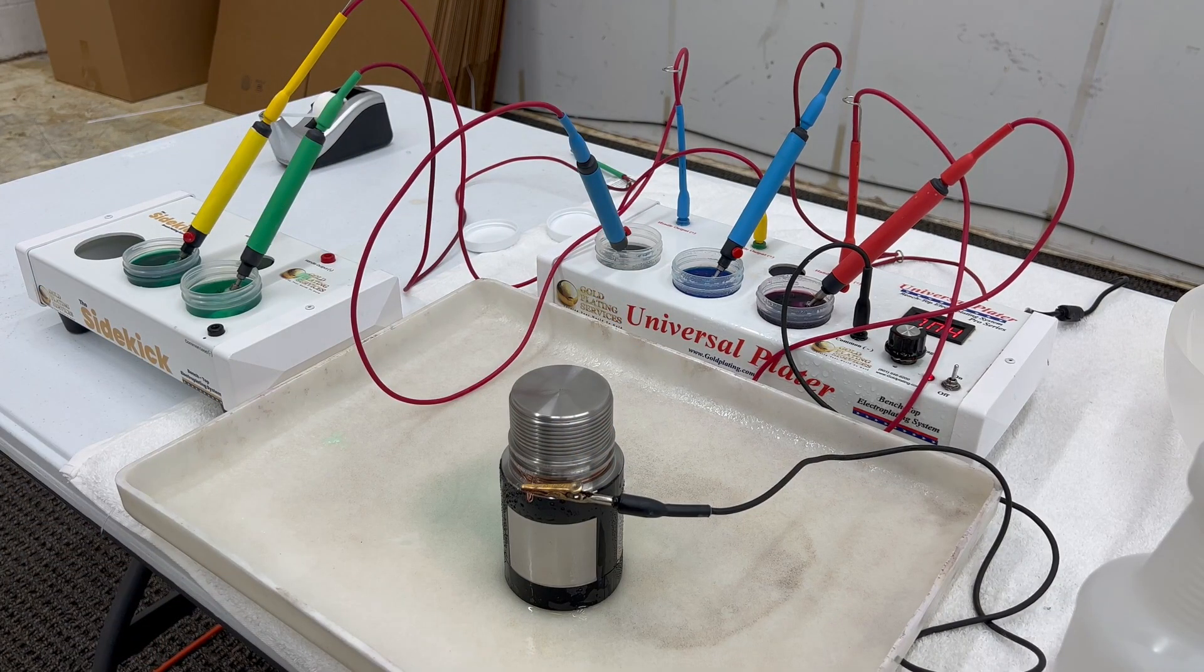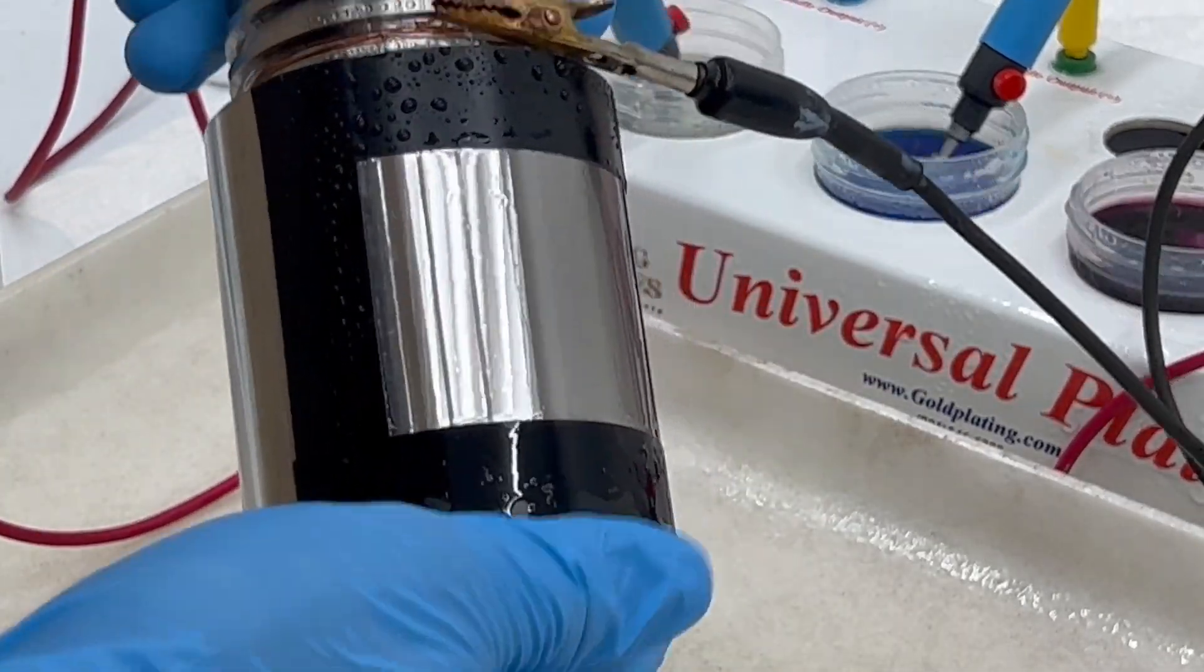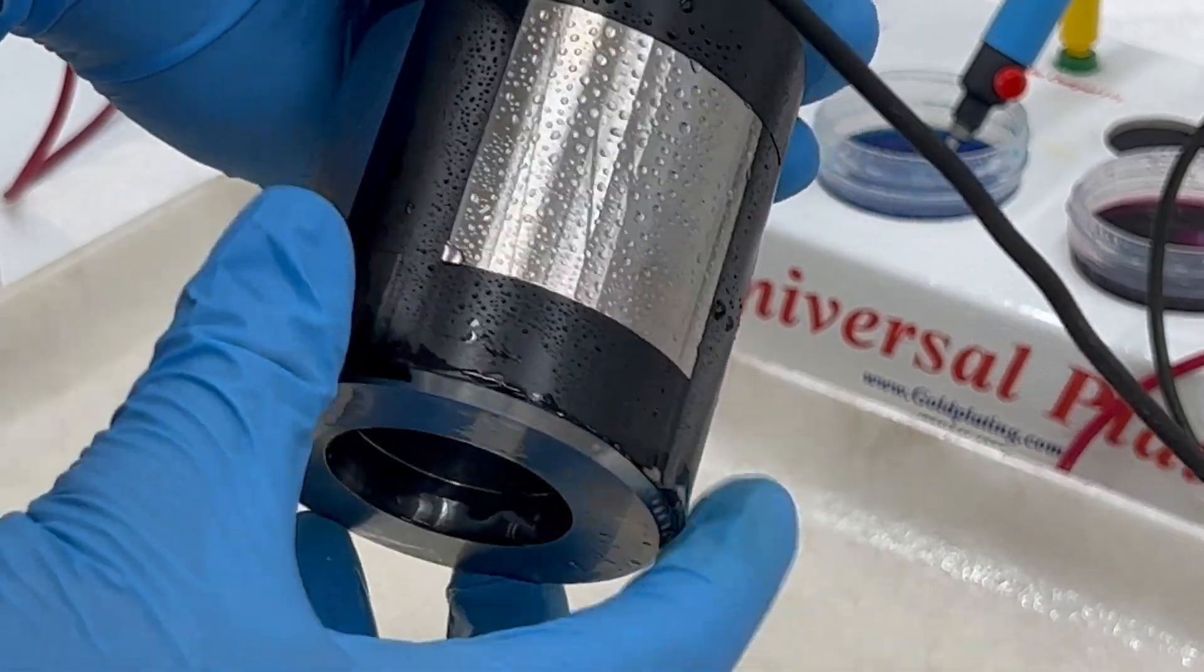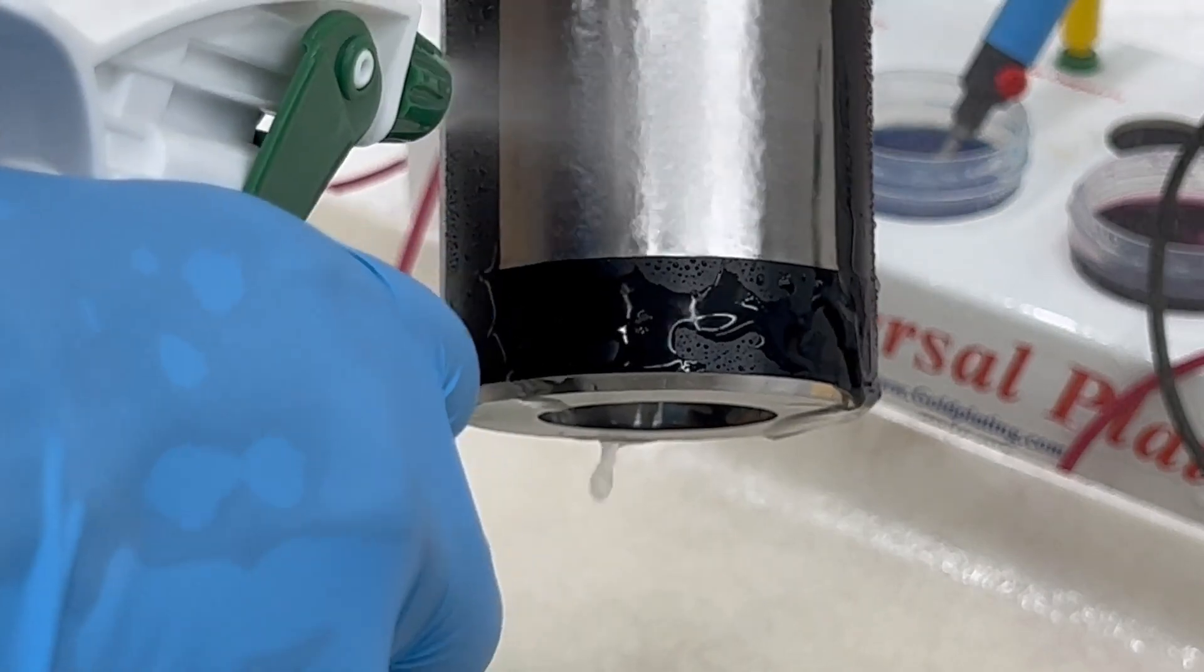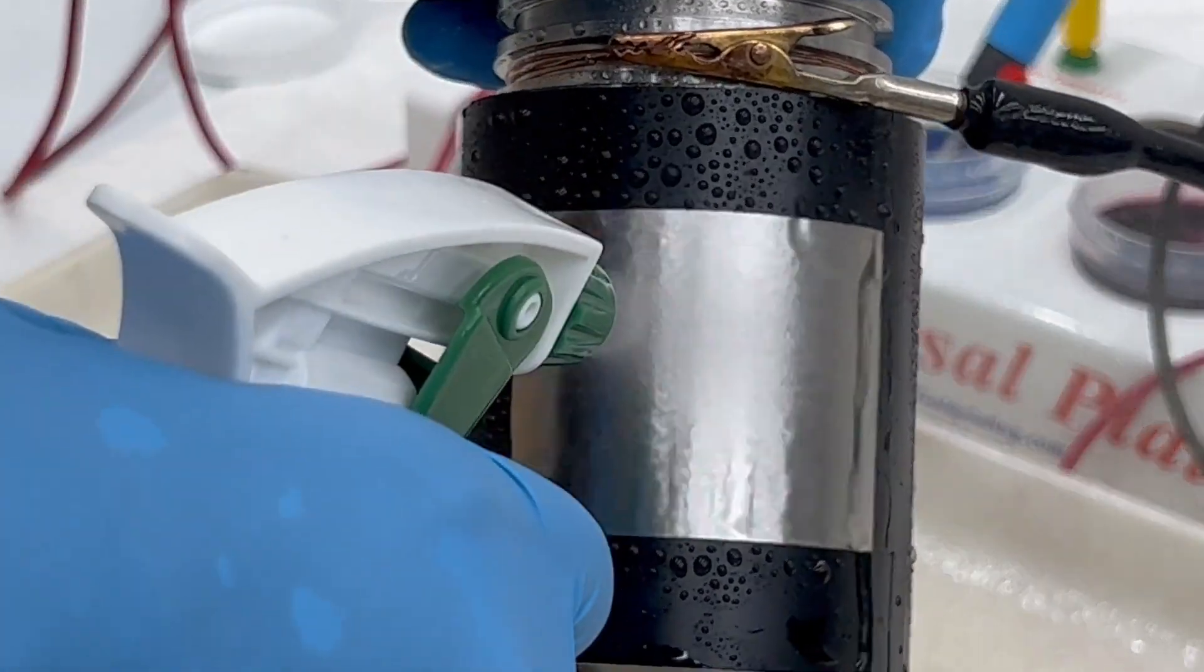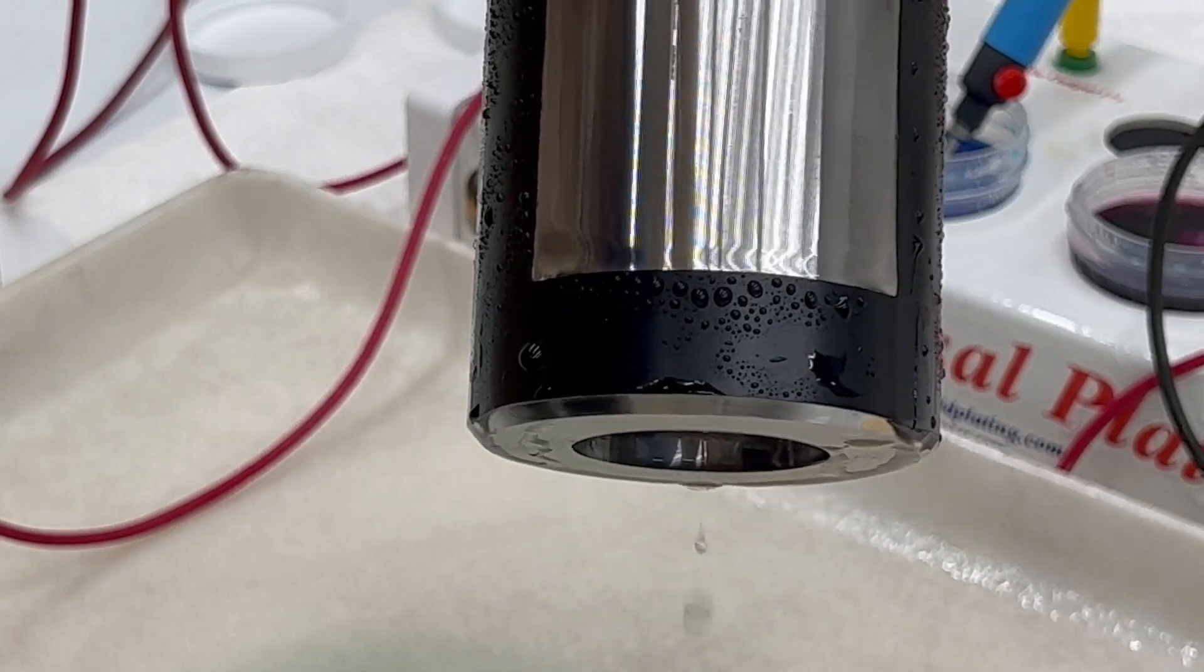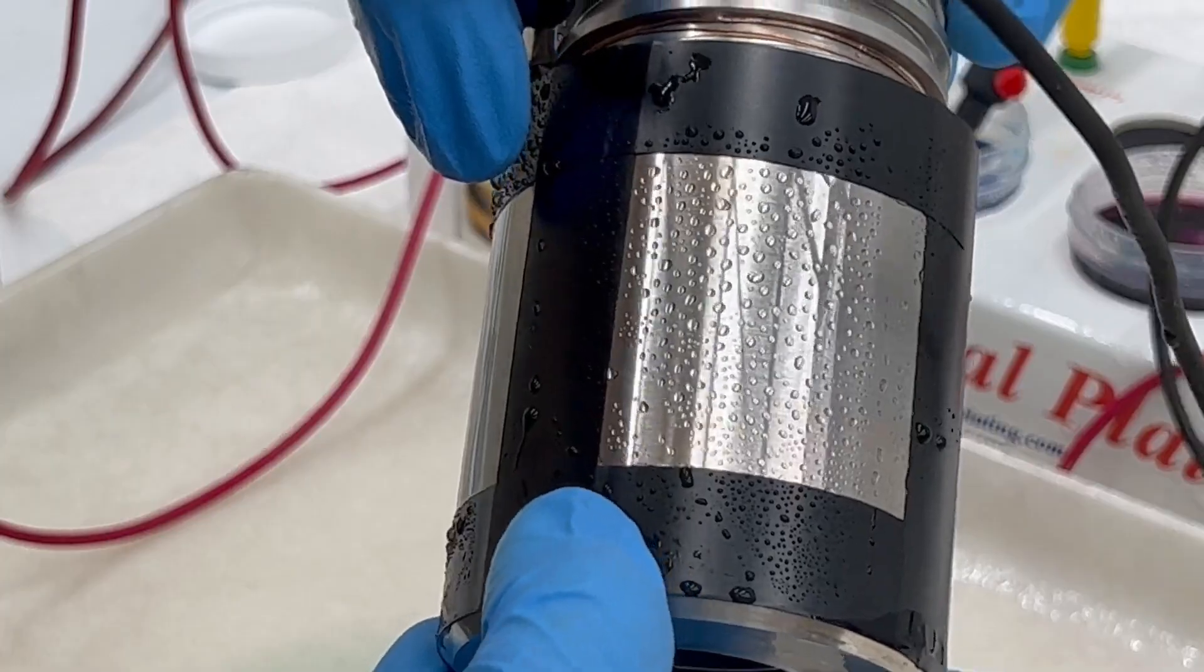Now we are going to test if our electro clean did its job properly. This is the side we electro cleaned and this isn't. We'll spray this and if the water doesn't stick to it, like beads up like it is on this tape right here, we are good. And it is doing it so this will be good to copper strike next.